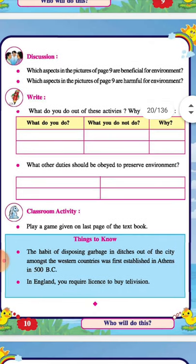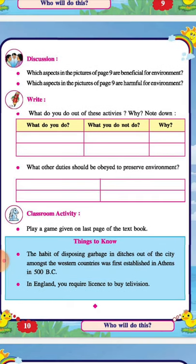Some things to know: the habit of disposing garbage in ditches outside of the city was first established in Athens in 500 BC. Also, in England you require a license to buy a television, because a television creates noise pollution.